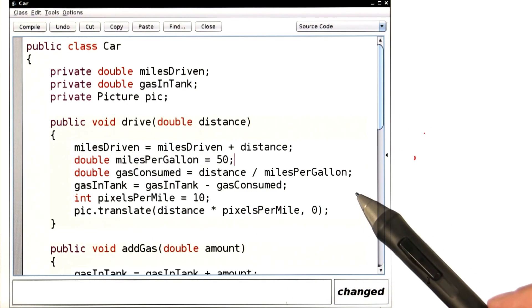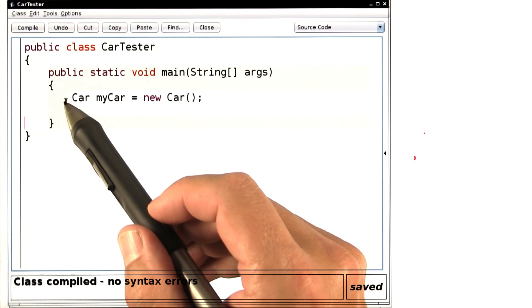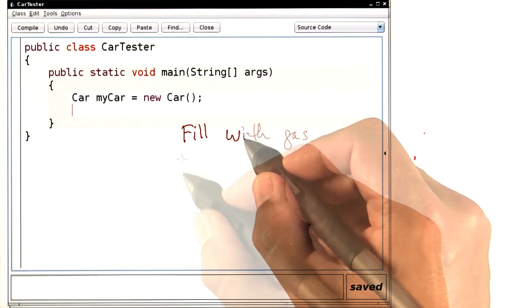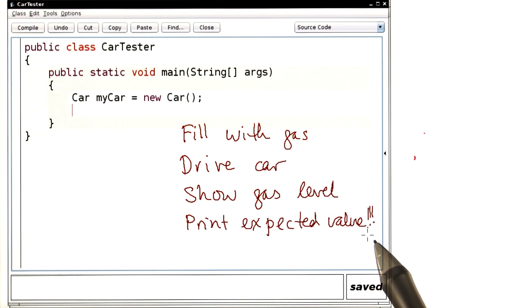Now how do we know that we did this right? This would be a good opportunity for a tester program. And that's what I want you to do next. Write a tester that constructs a new car, fill the car with gas, drive the car, show the gas level after the drive, and most importantly, print the expected value. That's what makes it a tester. Go ahead, do that in the coding environment, and then we'll compare notes.